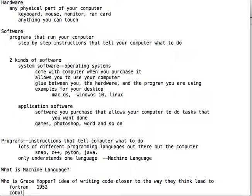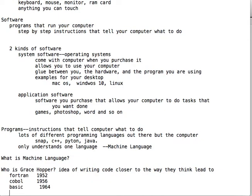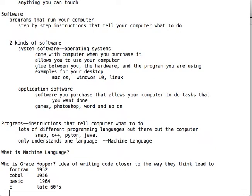Then COBOL was invented — that's another programming language, around 1956, and it's still used today. BASIC was invented in 1964 to teach college kids how to program at Dartmouth University. Then C was invented in the late 60s, and eventually it became C++ around the 70s. From Grace Hopper's idea, we now literally have hundreds of different programming languages that allow programmers to write code much closer to the way they think. She was a Commodore in the Navy, and after her idea, things really took off in the computer world.